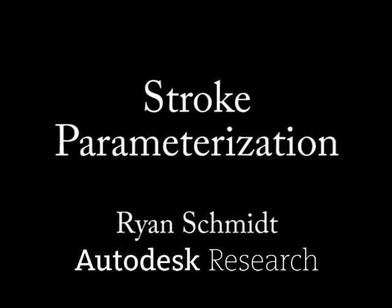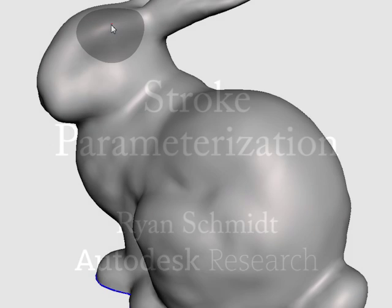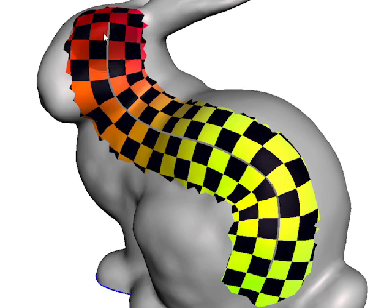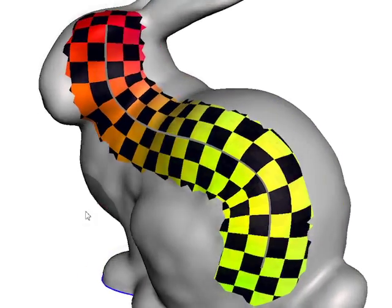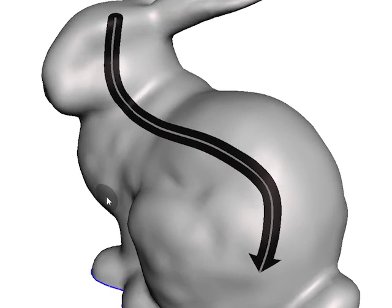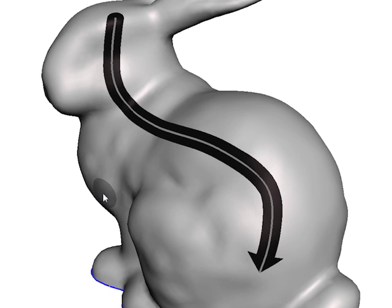Stroke parameterization is a new technique for computing a planar parameterization aligned with a curve on a 3D surface. Stroke parameterizations are useful for applying procedural texture to 3D surfaces. The width of the parameterization can be interactively controlled.